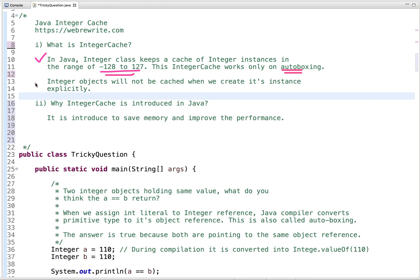So now integer objects will not be cached when we create its instance explicitly using new keyword and why integer cache is introduced in Java? So it is introduced to save memory and improve the performance.